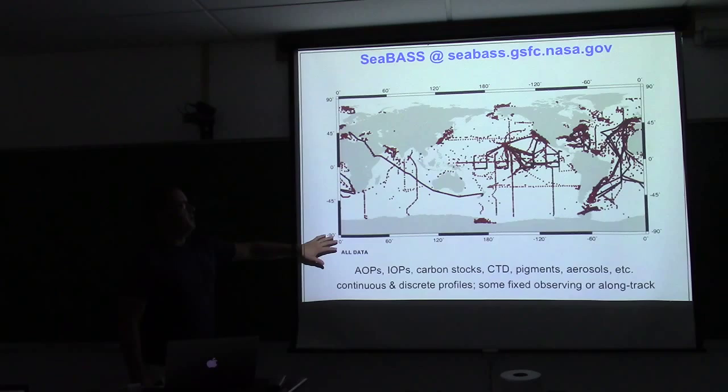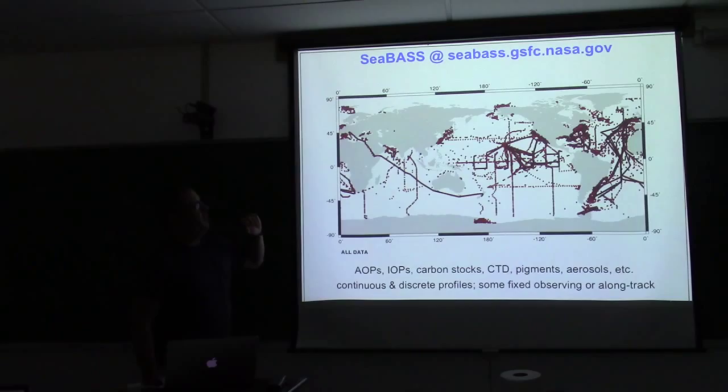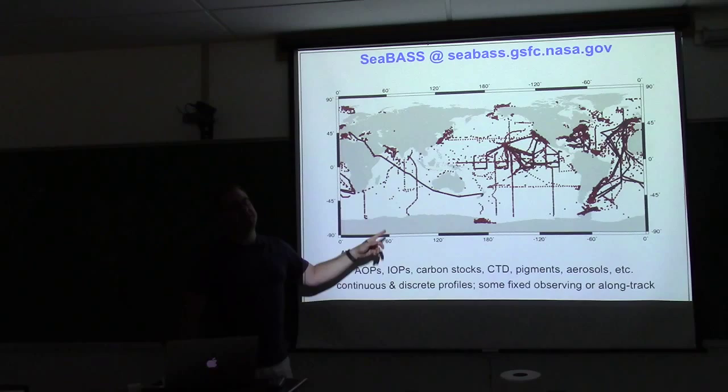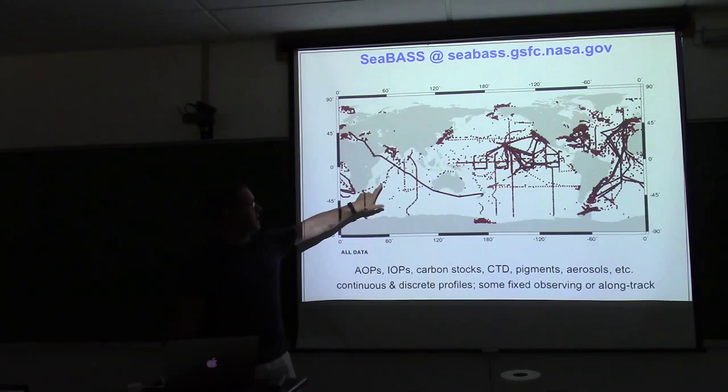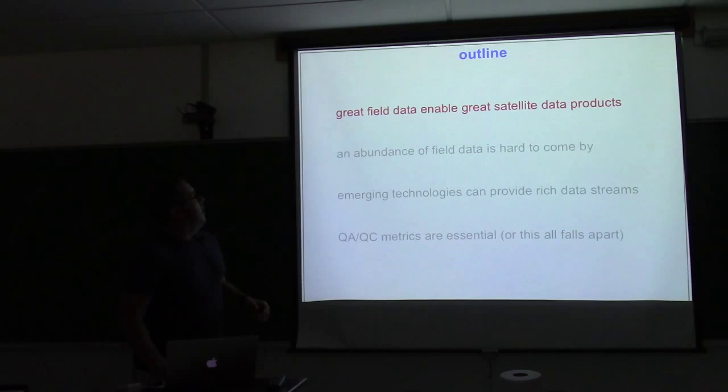This map represents all space and all time for data collected that now resides in the CBAS archive — it's a couple of years old. At first blush it looks pretty filled, especially when you focus on the US East Coast. But then you see huge patches of ocean with no data at all. You might start asking yourself: I know the satellite collects data here, but how do I know it's any good?